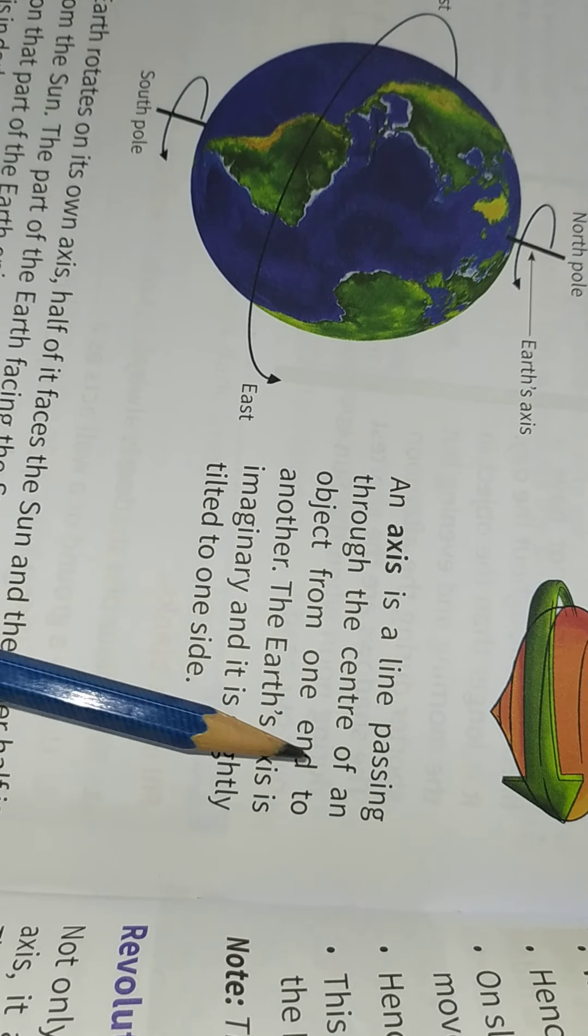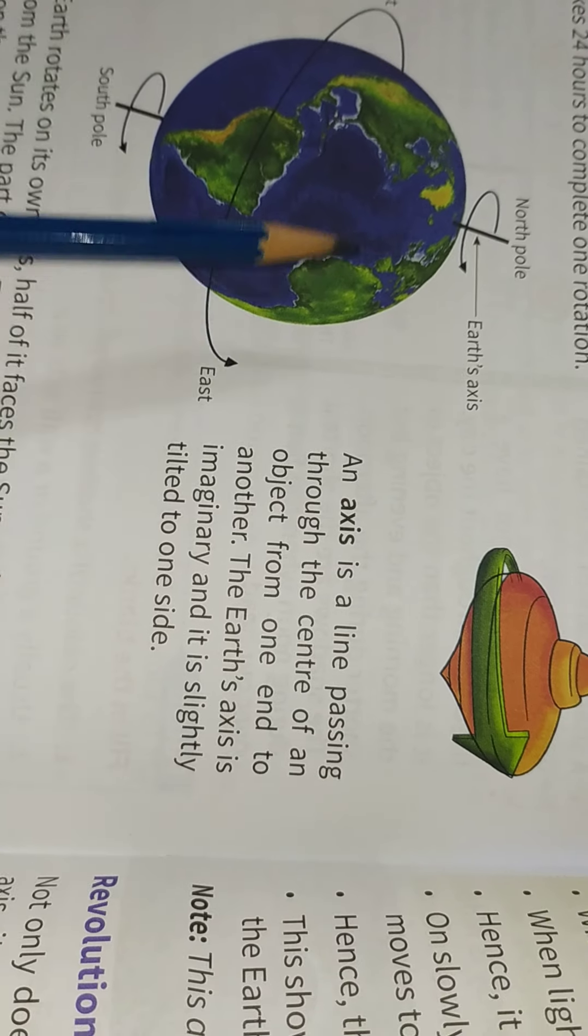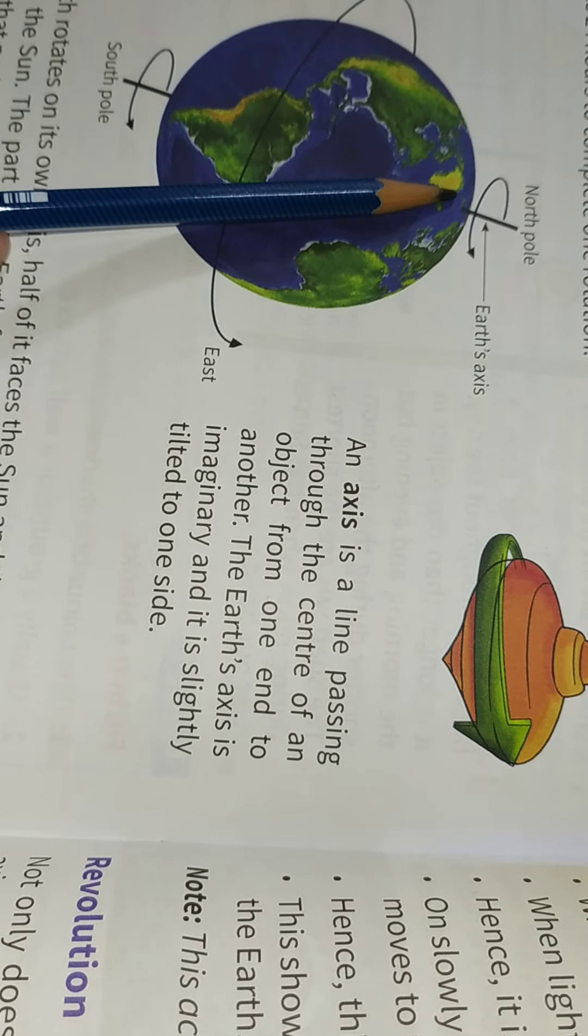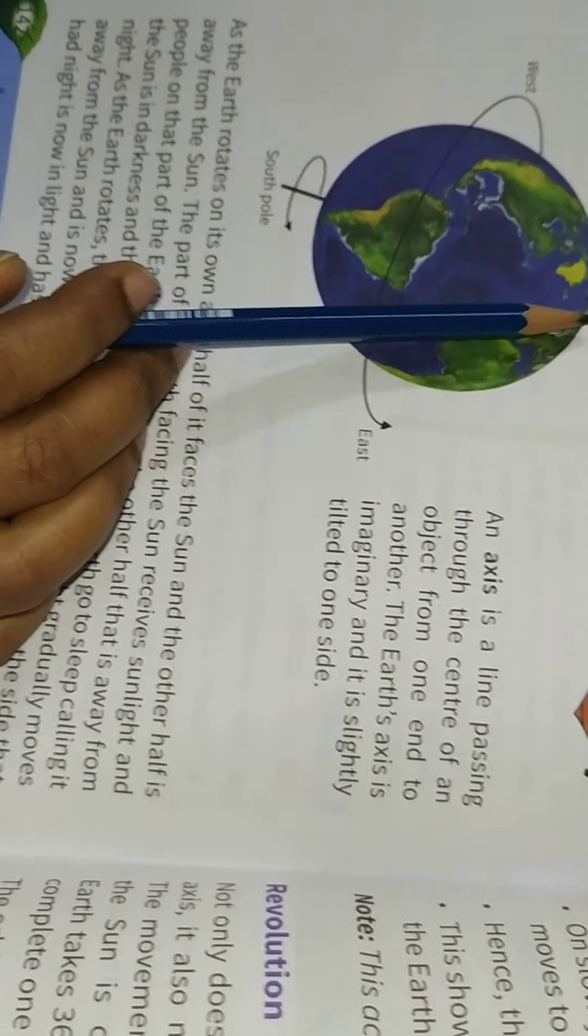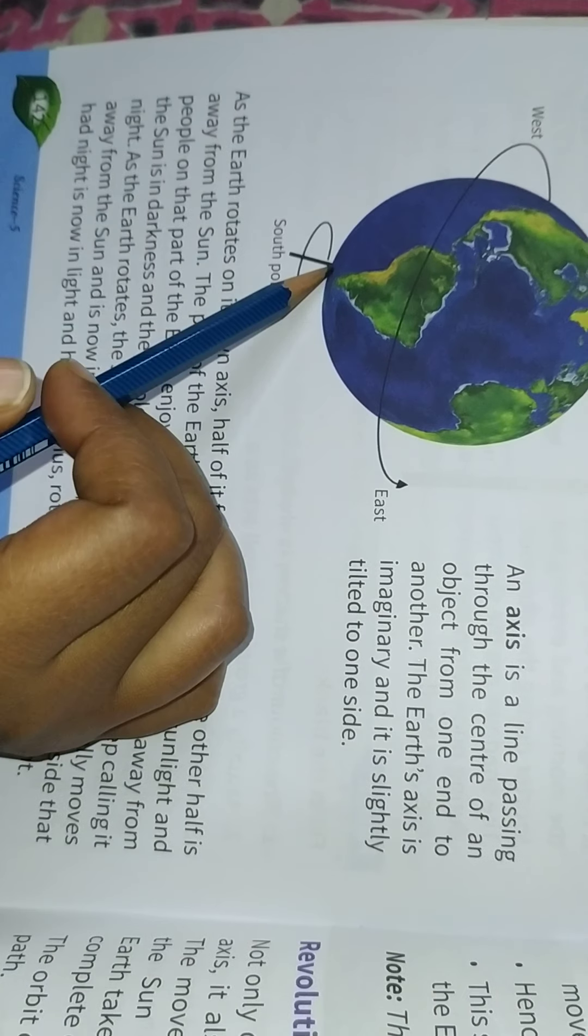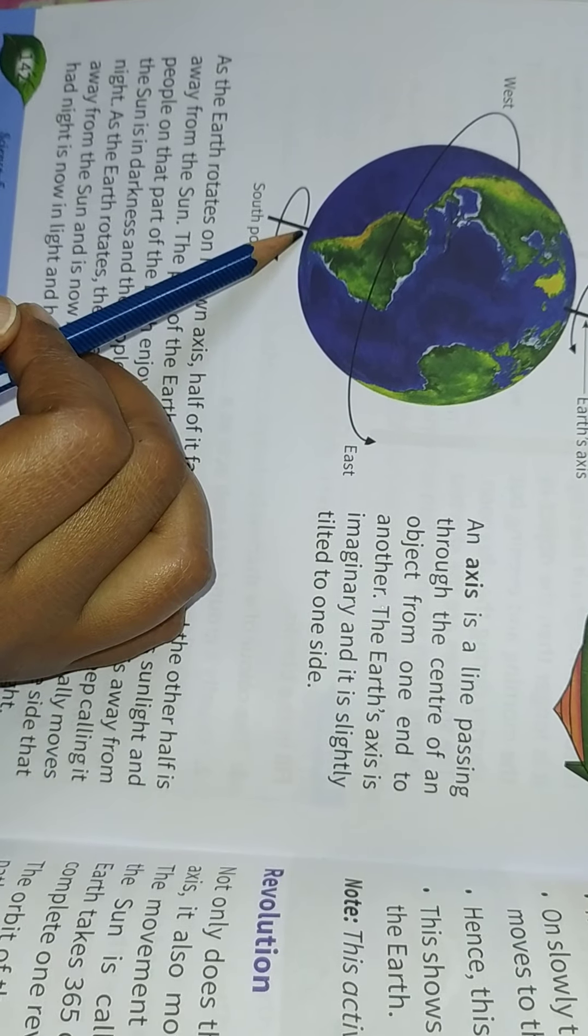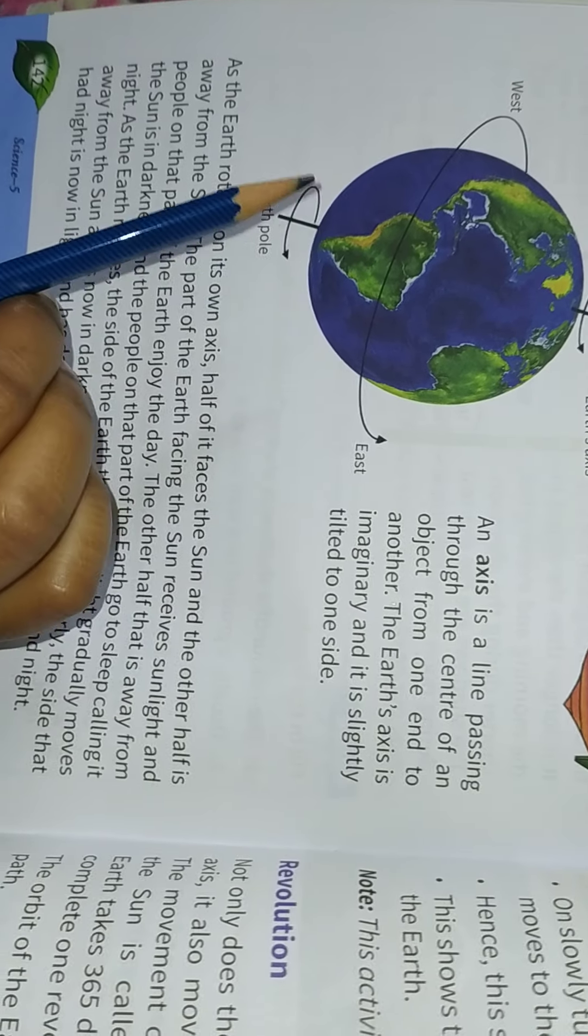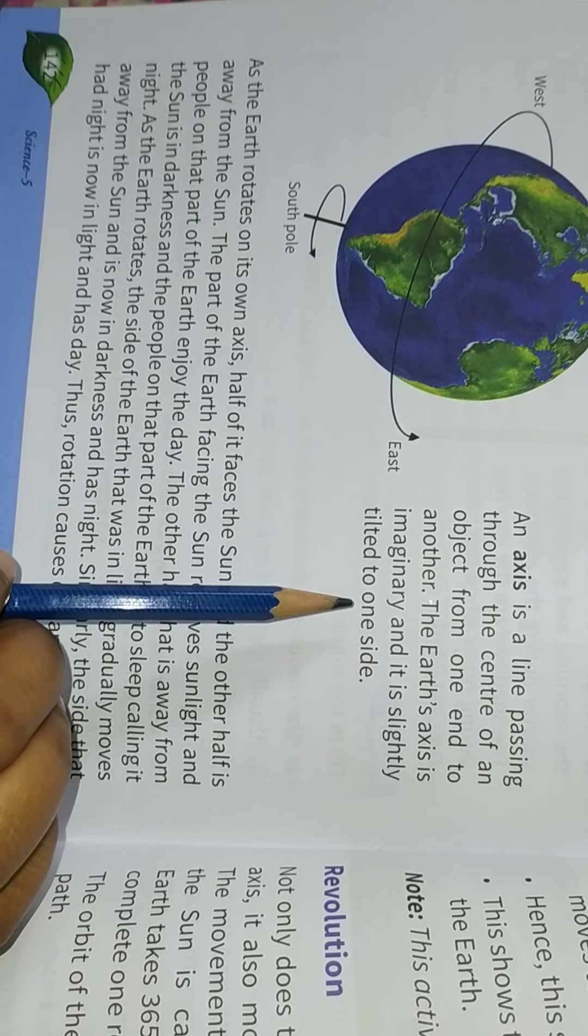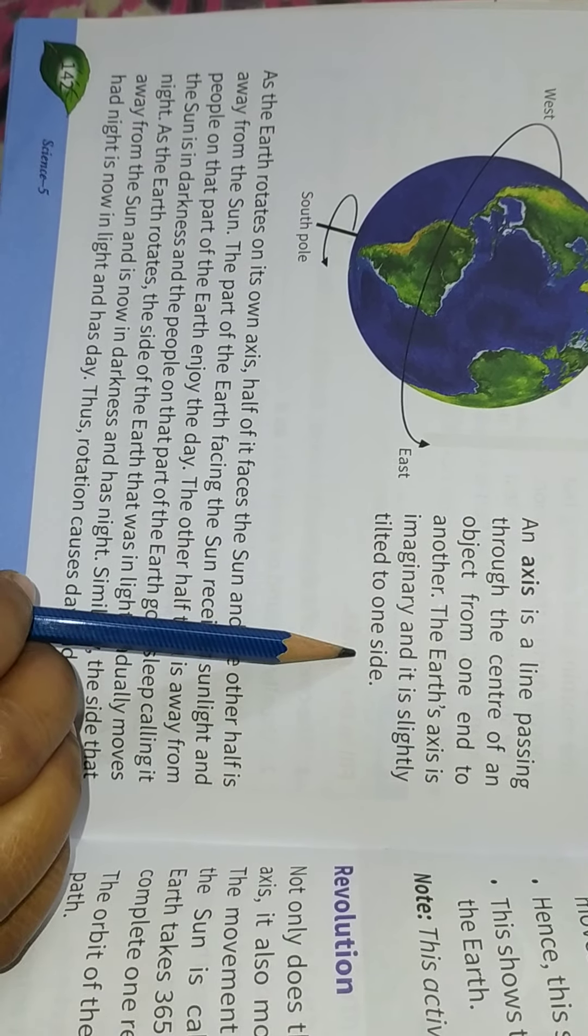An axis is a line passing through the center of an object from one end to another. The Earth's axis is imaginary and it's slightly tilted to one side.